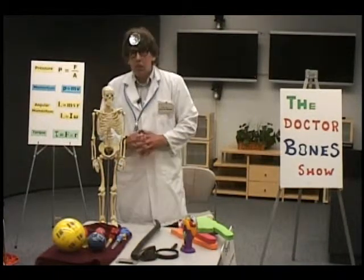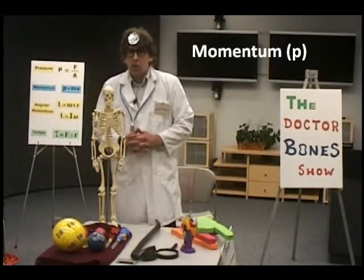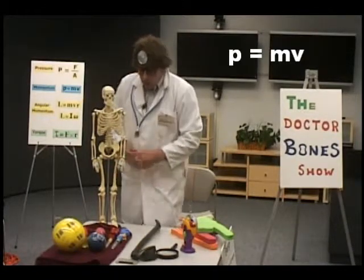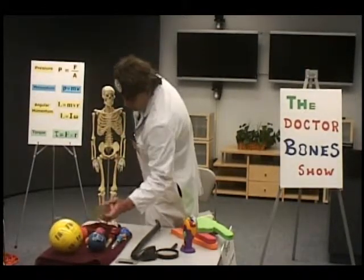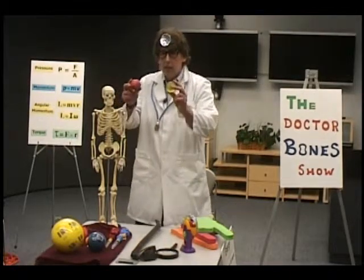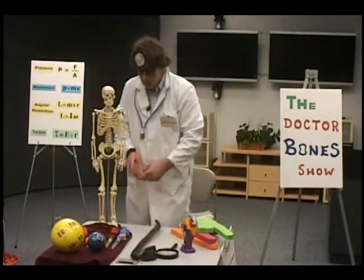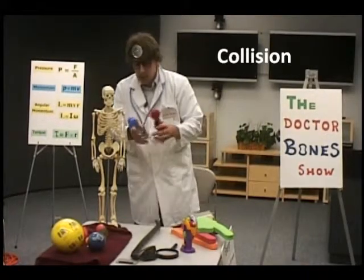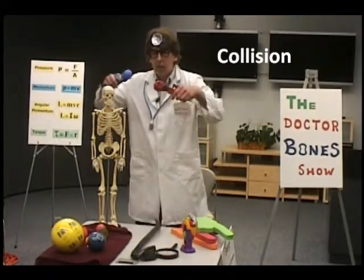So we talked a little bit about momentum in a previous lecture. Momentum is mass times velocity. And if you've got a mass that's about the same size as the other mass and they collide — of course, this is called a force of collision — sort of like two boxing gloves coming together.